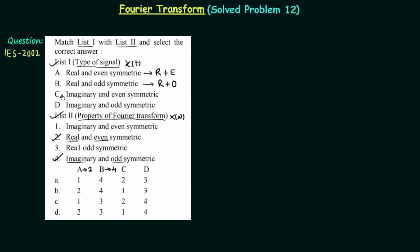Signal C is imaginary and even. When xt is imaginary and even, the Fourier transform is also imaginary and even. So C will match to 1.